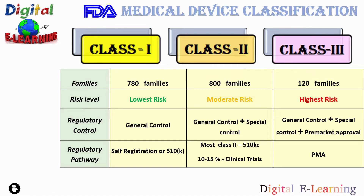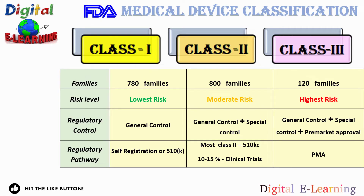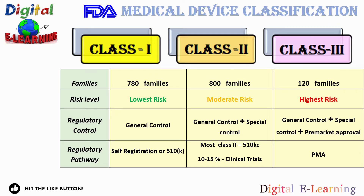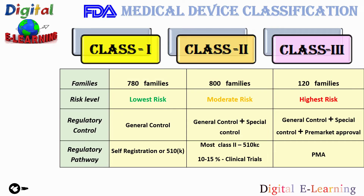Class 2 medical devices are those where general controls are not sufficient enough to assure the safety and effectiveness of the device, and special controls are required as well. There are around 800 families of medical devices out of 1700 — approximately 43% of all medical devices. They mostly require a 510(k) submission, but 10 to 15% of devices do require clinical trials as well. They are the moderate risk devices.